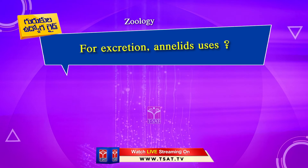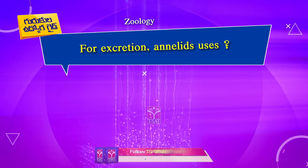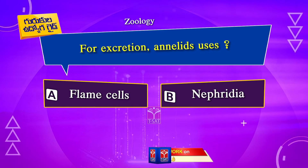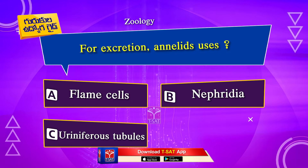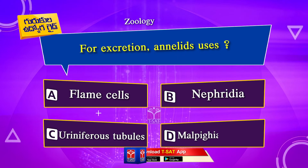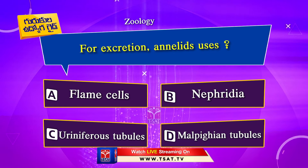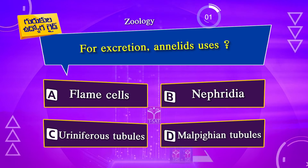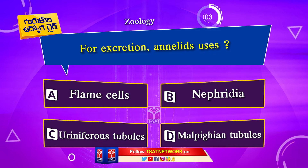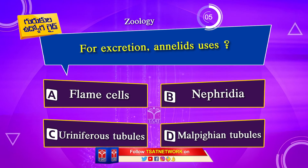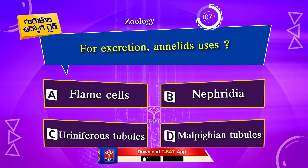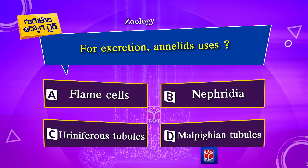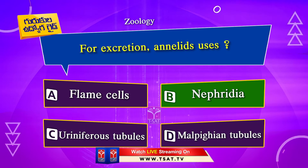Next question. For excretion, annelids use: Option A. Flame cells. Option B. Nephridia. Option C. Uriniferous tubules. Option D. Malpighian tubules. The correct answer is Option B. Nephridia.